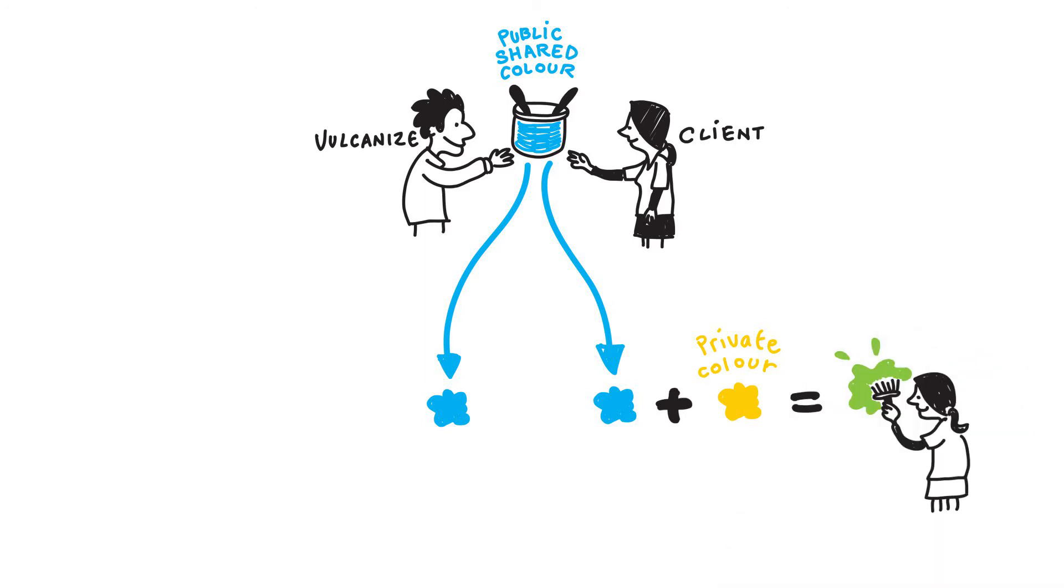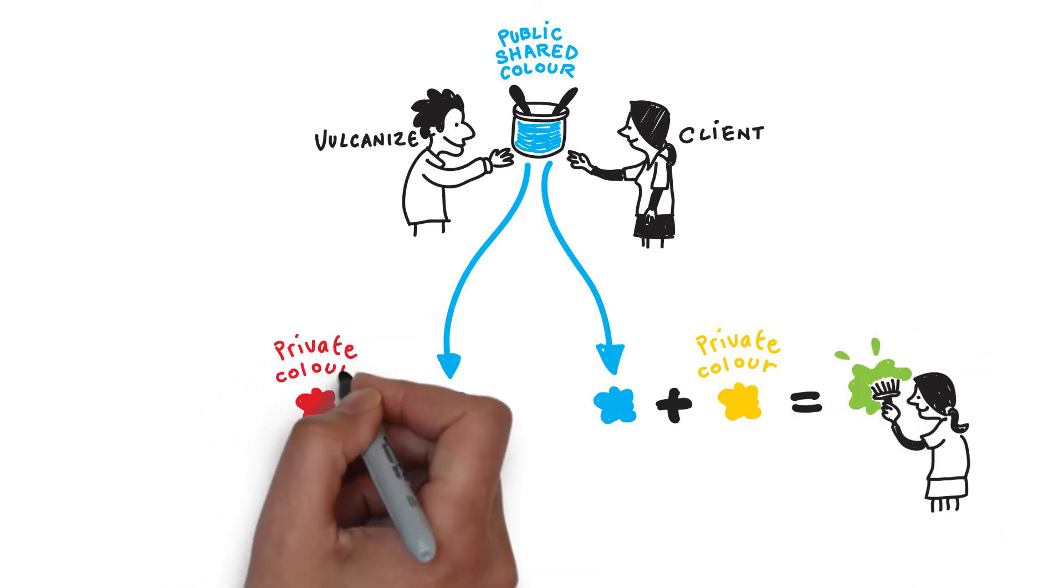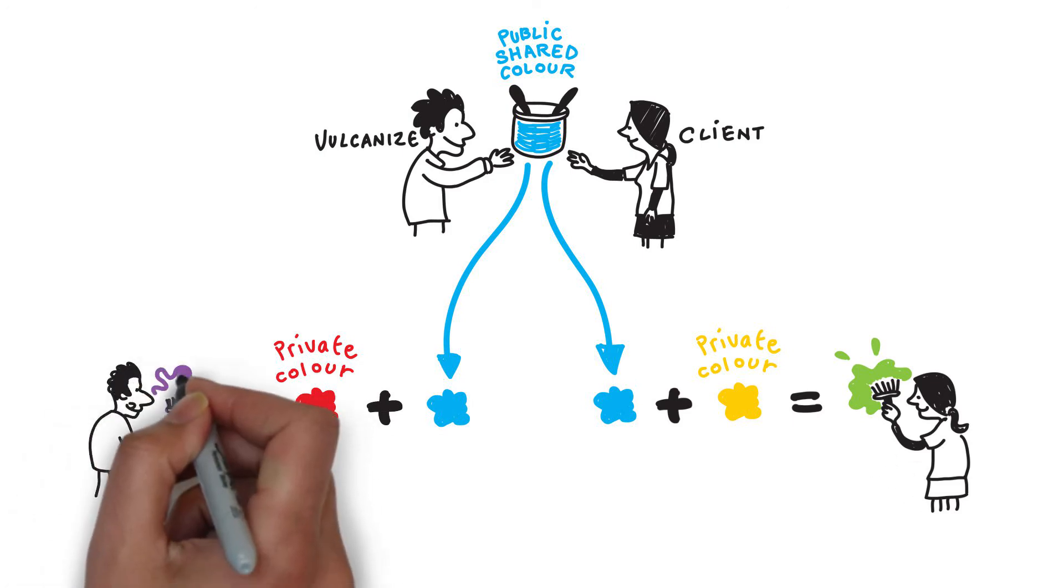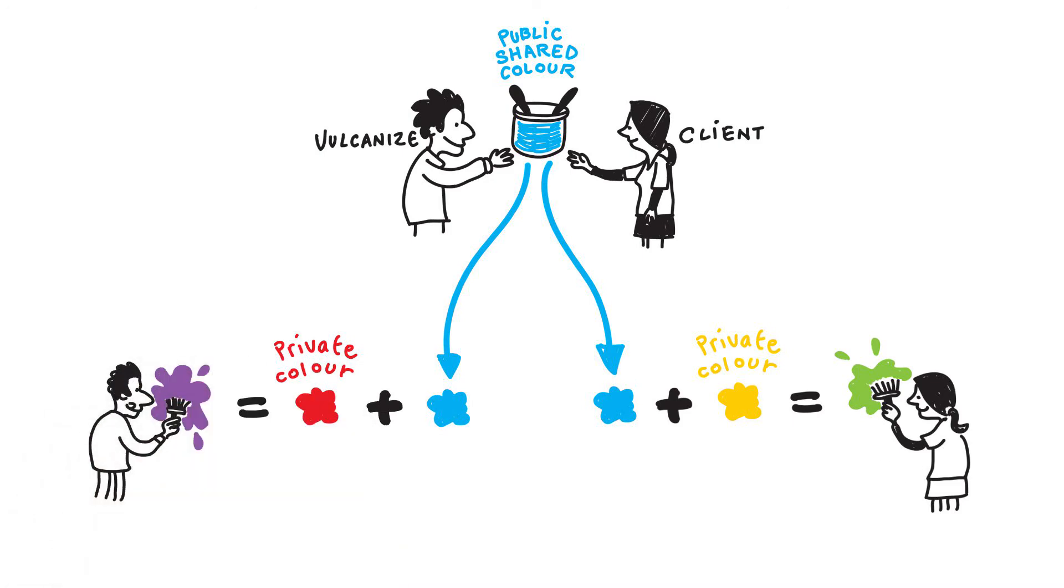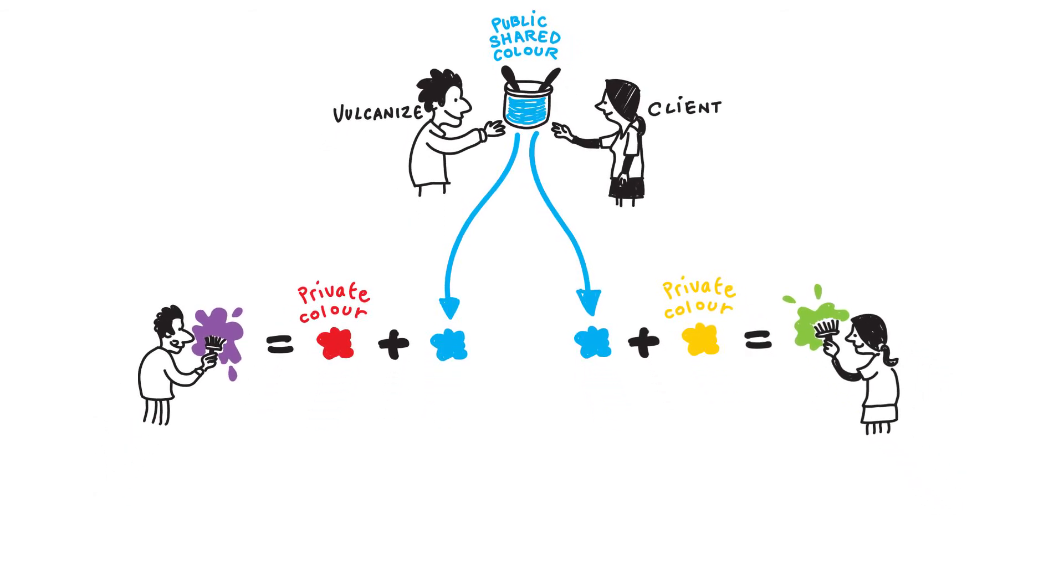Vulcanize also mixes their blue with a random private color, red, to give, in this example, a specific shade of purple. They then share these public mixed colors of green and purple with each other.